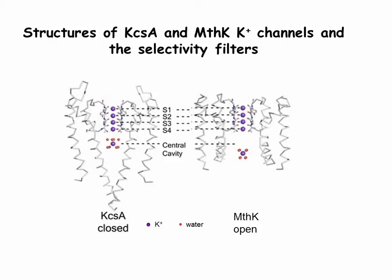They catalyze the rapid selective diffusion of potassium ions down their electrochemical gradient. The structure of the potassium channel has provided a firm basis for understanding the mechanisms of rapid potassium ion transport in cells. The crystal structures of KCSA potassium channel in its closed state reveal an ion conduction pathway consisting of a selectivity filter and an adjacent central cavity. The structures of the isolated ion conduction pore of MTHK in its open conductive state revealed a similar selectivity filter and a central cavity.